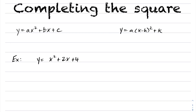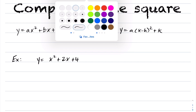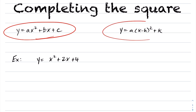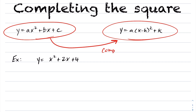In this video, we want to talk about completing the square. When you're completing the square, what you're trying to do is go from a quadratic in standard form to a quadratic in vertex form. To go from standard form to vertex form, we're going to introduce the technique known as completing the square.